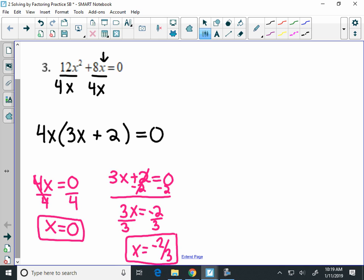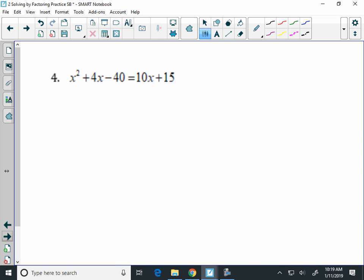Good, so the other problem I'm going to do here is number 4. Now in order to start this problem, you need to make sure that you set this quadratic equal to zero. Which means I'm going to move this 10x by subtracting it over. Now I'm going to do this in the same step here. I'm also going to subtract 15 from both sides. Because what's going to happen on the right-hand side is those are going to cancel off to give you the zero that you're looking for. And on the left-hand side, you'll keep your x squared. 4 minus 10 is negative 6x. And negative 40 minus 15 is negative 55.